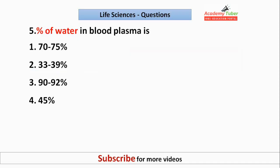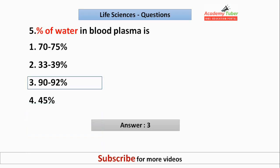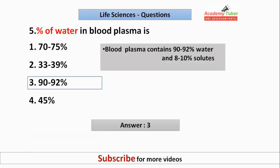The percentage of water in blood plasma is? The answer is 90 to 92 percent. Blood plasma contains 90 to 92 percent water and 8 to 10 percent solutes.